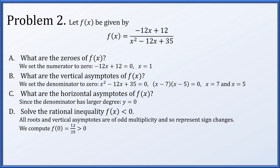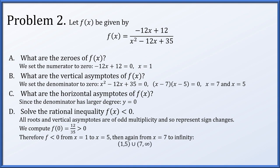Evaluating f(0) = 12/35, which is positive, so the function is positive to the left of x = 1. It changes sign at x = 1, so it is negative from 1 to 5, positive from 5 to 7, and negative again from 7 to infinity. Therefore f(x) < 0 on the intervals (1, 5) ∪ (7, ∞), excluding endpoints since x = 1 is a zero and x = 5, 7 are not in the domain.